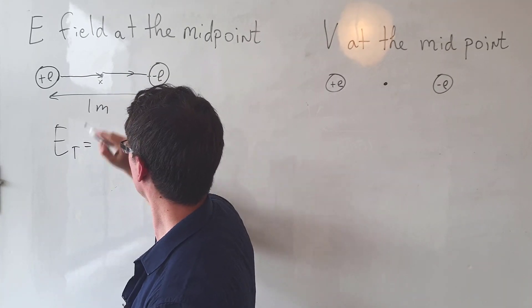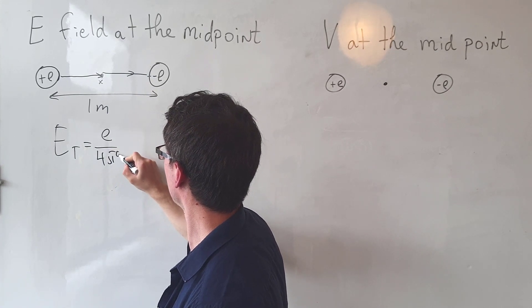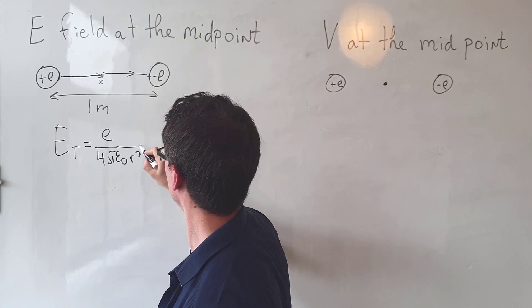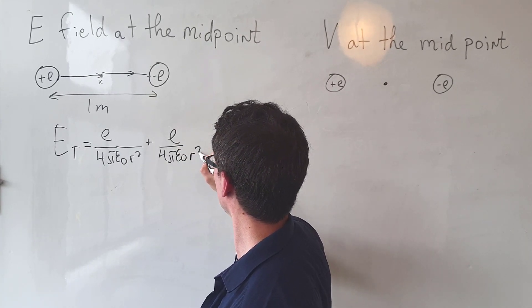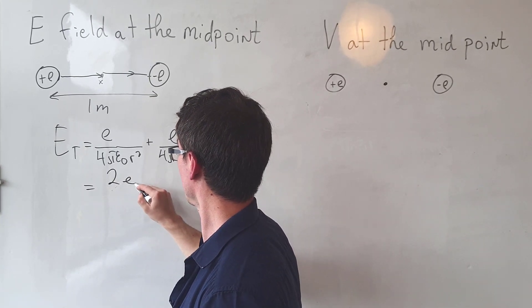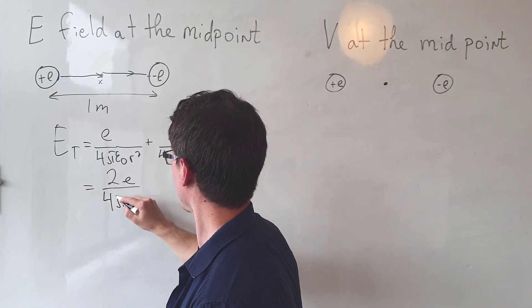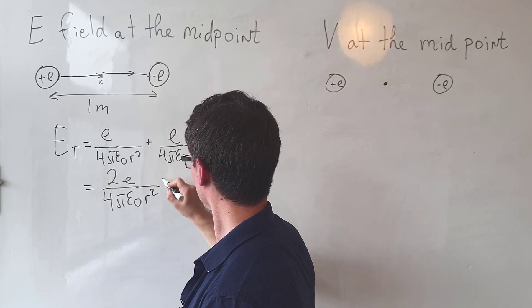E total will just be equal to E over 4πε₀r² plus E over 4πε₀r², which is of course equal to 2E over 4πε₀r².